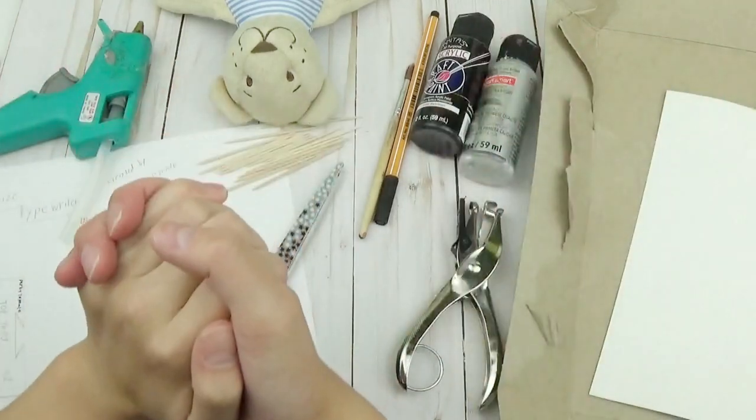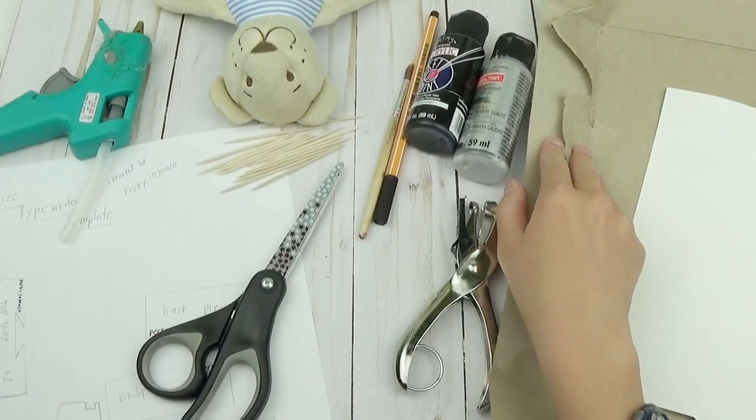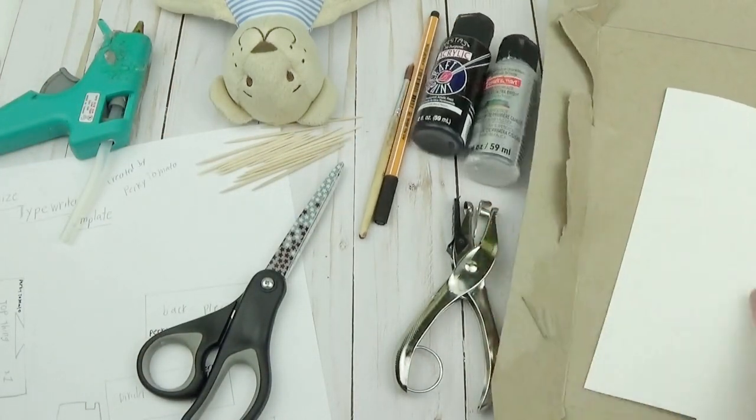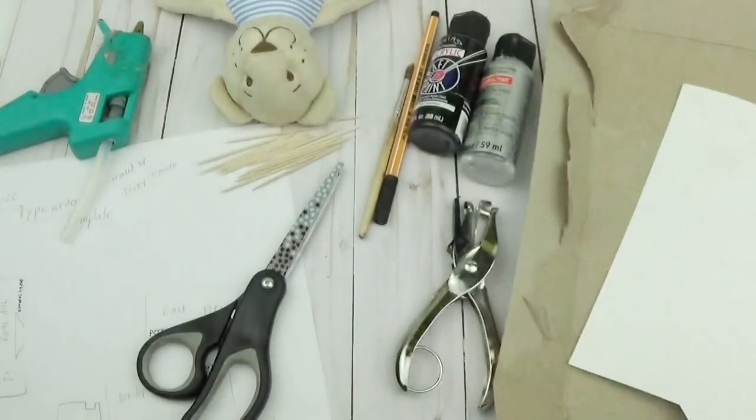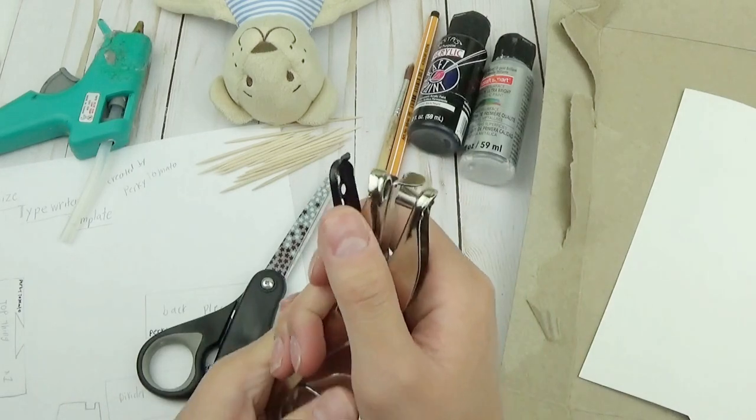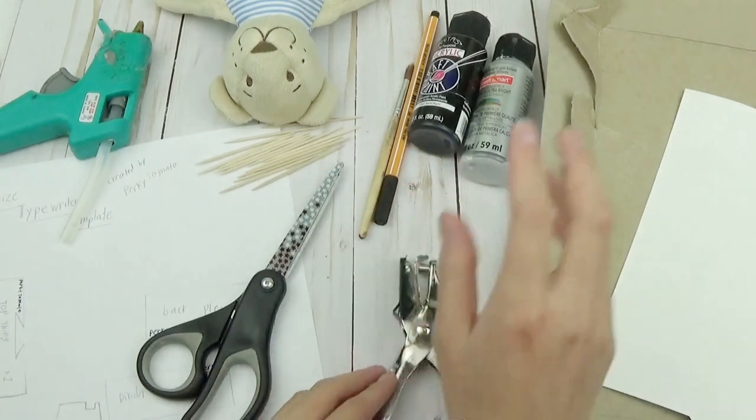The things you're going to be needing to make this craft are some paperboard, and you can get this from any cereal box or cracker box, some thick cardstock or watercolor paper, and a hole punch, preferably a handheld hole punch because it's the right size.